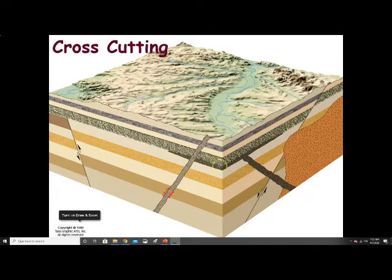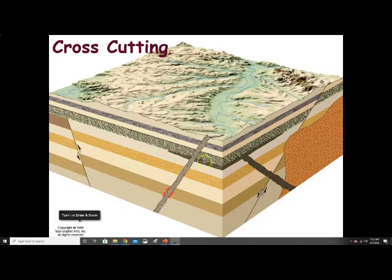This layer here could have contact metamorphism on both the top and the bottom, which would tell us that the igneous intrusion occurred while this layer was already here. If it only has contact metamorphism on the bottom but not the top, that tells us the intrusion occurred and then this layer was deposited afterwards. This is what's called the sequence of events.